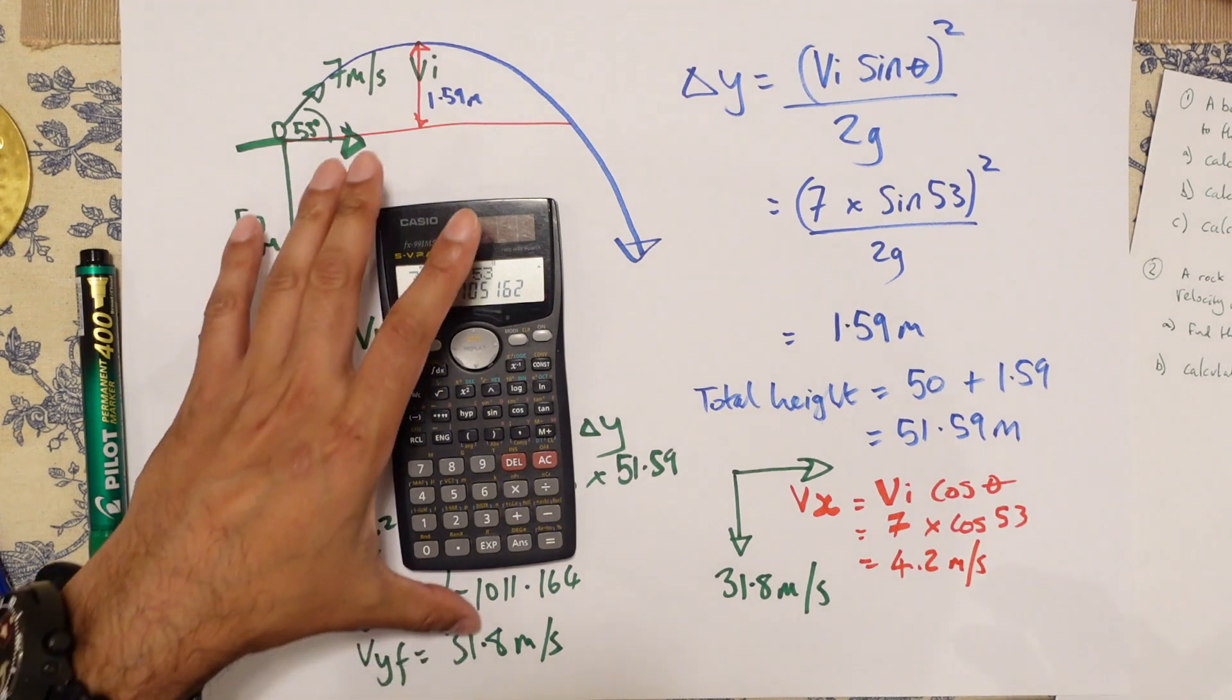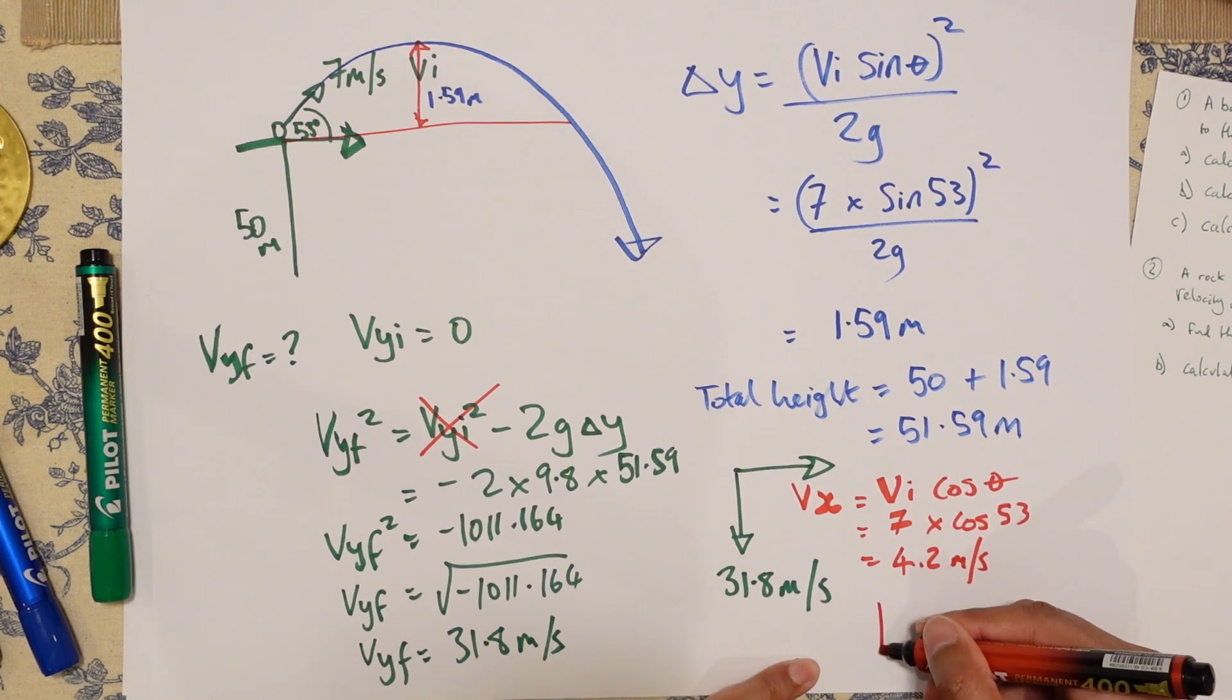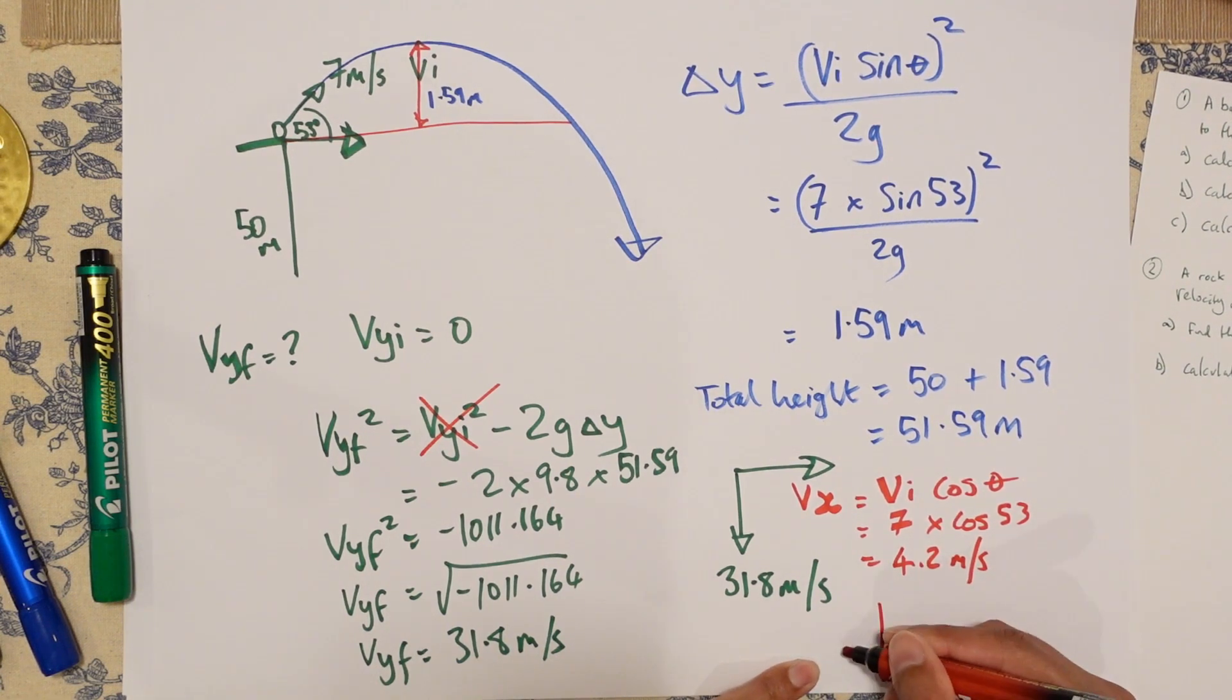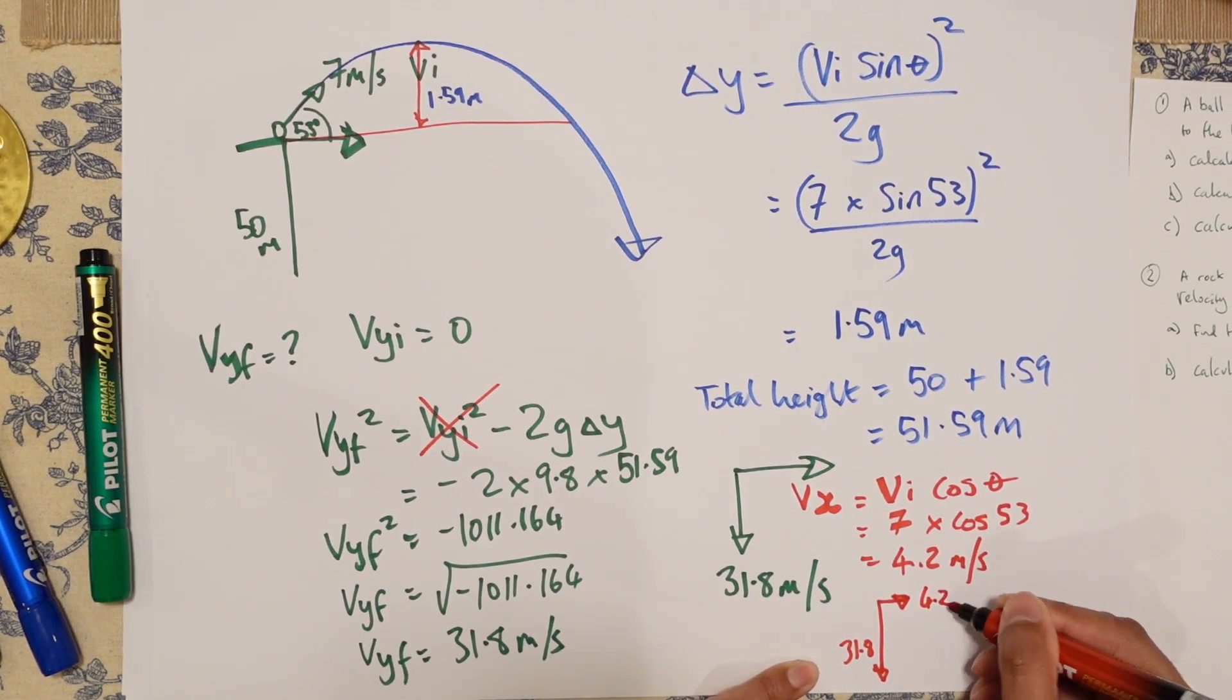Now we've got a Pythagoras situation here, haven't we? So essentially, we've got that is 31.8. And we've got like this, 4.2. And we want to work out basically this is your resultant like that.